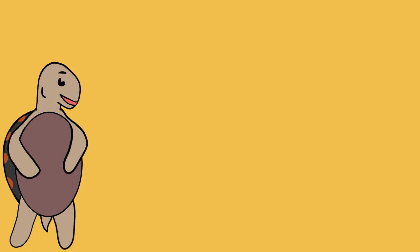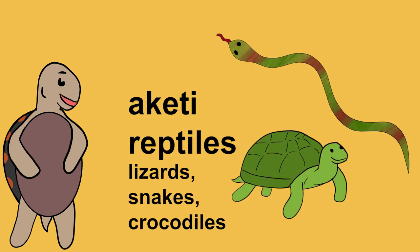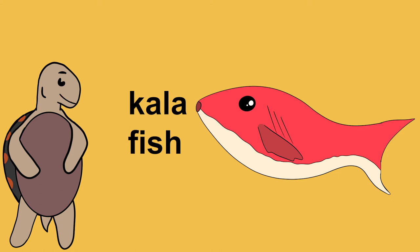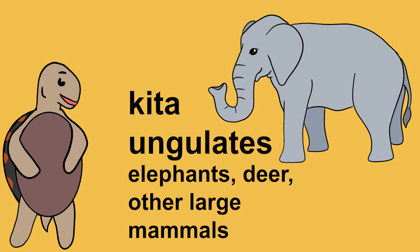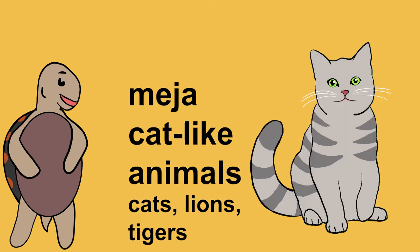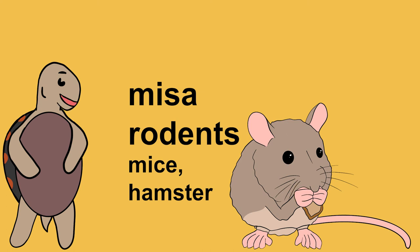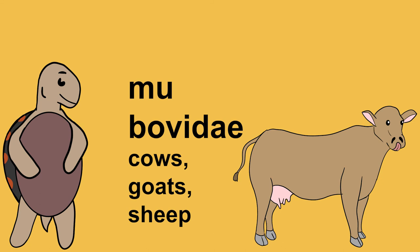Now our vocabulary will be about animals and some other words. We all love animals, but having many words for them is tough in any language. In Toki Ma there are 13 words for animals: 'aketi' for reptiles, lizards, snakes, crocodiles; 'kala' for fish; 'keke' for primates, monkeys and chimpanzees; 'kita' for ungulates like elephants, deer or other large mammals; 'mea' for cat-like animals like cats, lions, tigers; 'misa' for rodents like mice and hamsters; 'mu' for bovids like cows, goats and sheep.